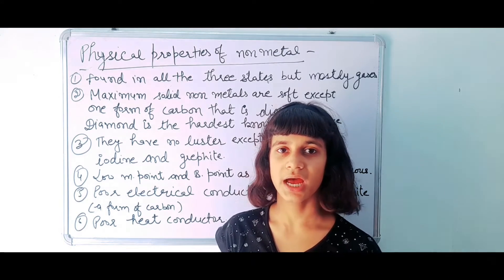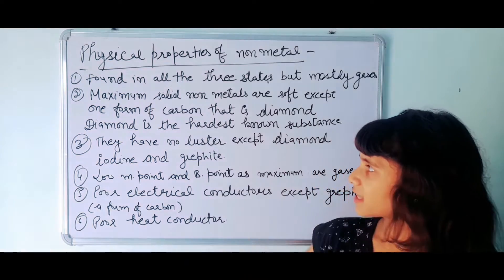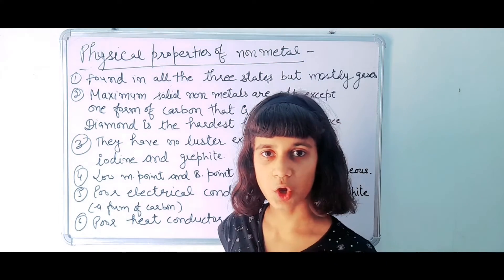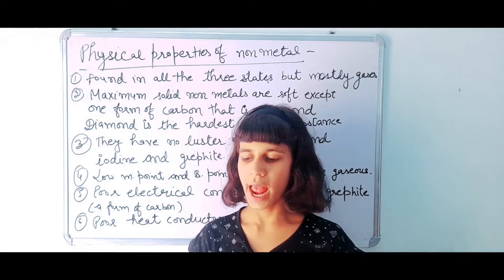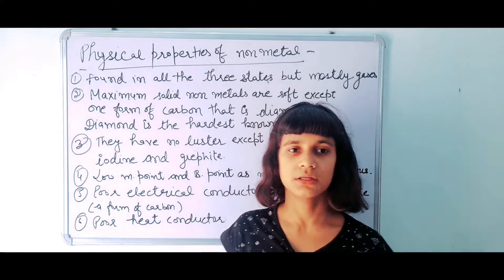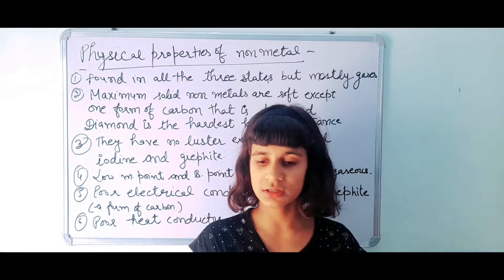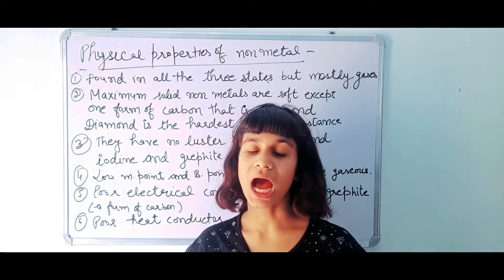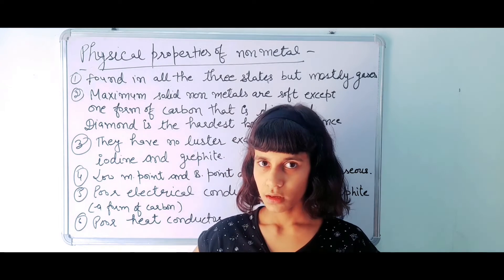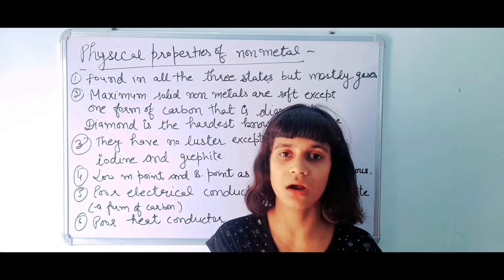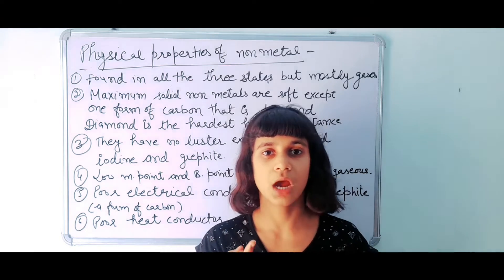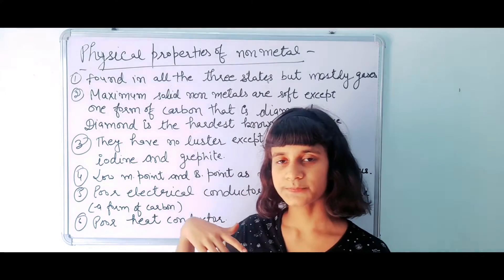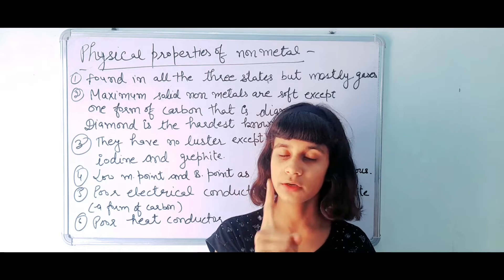Our next point is that maximum solid non-metals are soft, except diamond because it is made up of carbon. All non-metals which are in solid form are soft, but diamond is the exception — it is the hardest substance in the world. It is a non-metal, it is in solid form, and it is hard.